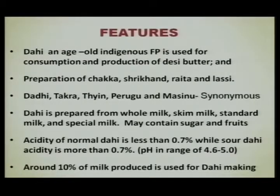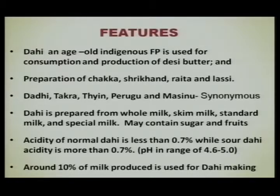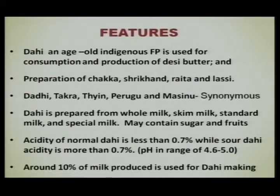Dahi can be used for direct consumption and production of desi butter and subsequently ghee. Other products prepared from it include chakka, shrikhand, raita, and lassi. Synonyms used are dahi, takra, thayin, and pengu. Dahi can be prepared from whole milk, skim milk, standard milk, or specialized milk, and may contain sugar and fruits. Acidity of normal dahi is less than 0.7 percent, while sour dahi is classified when acidity is more than 0.7 percent. Around 10 percent of the milk produced is used for dahi making, and its production is continuously increasing in both organized and unorganized sectors.